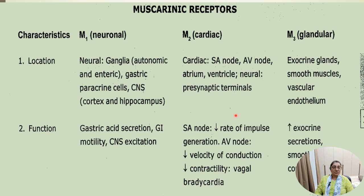M3 receptors are located at exocrine glands, smooth muscle, and vascular endothelium. The functions of M3 receptors include increased exocrine secretion and smooth muscle contraction.